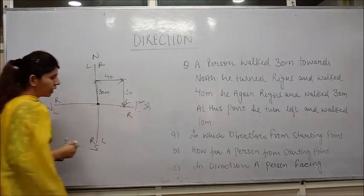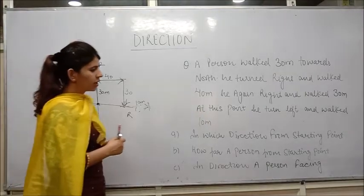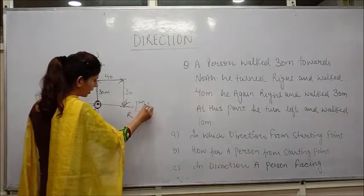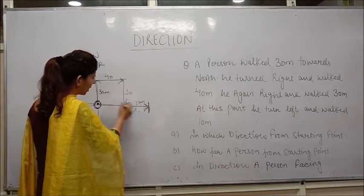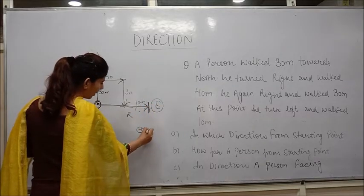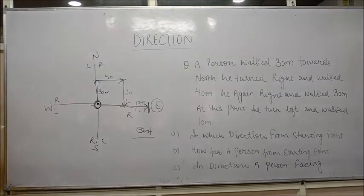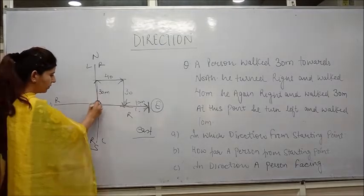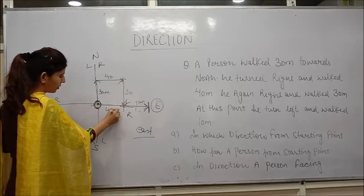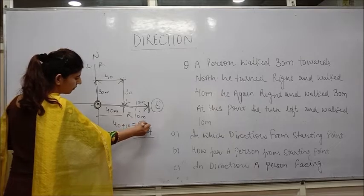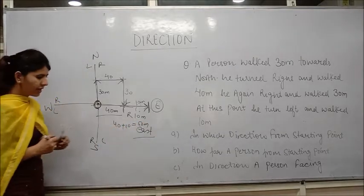Now the questions asked are: first, in which direction is the person from the starting point? The person starts his journey from the starting point and reached the final point. From the starting point, his direction is east. So the first question's answer is east. The second question is: how far is the person from the starting point? This is 40 meters, so this side is also 40, and this is 10 meters. Total 40 plus 10 is equal to 50 meters. So the second question's answer is 50 meters.